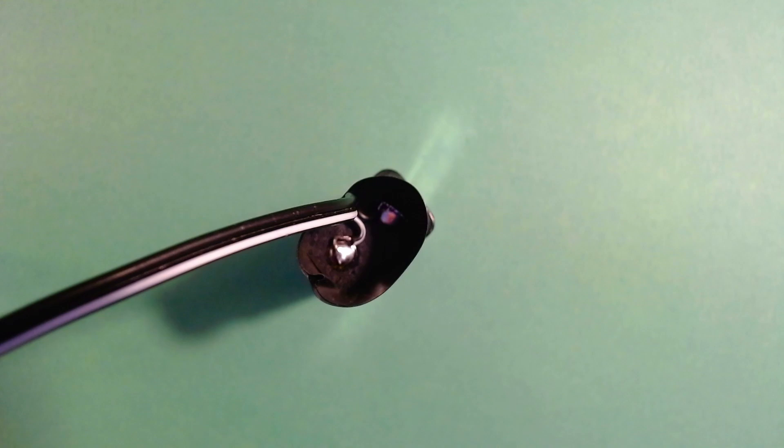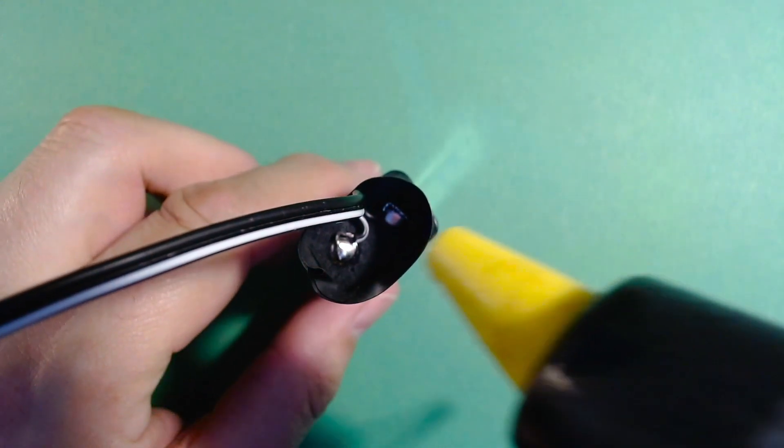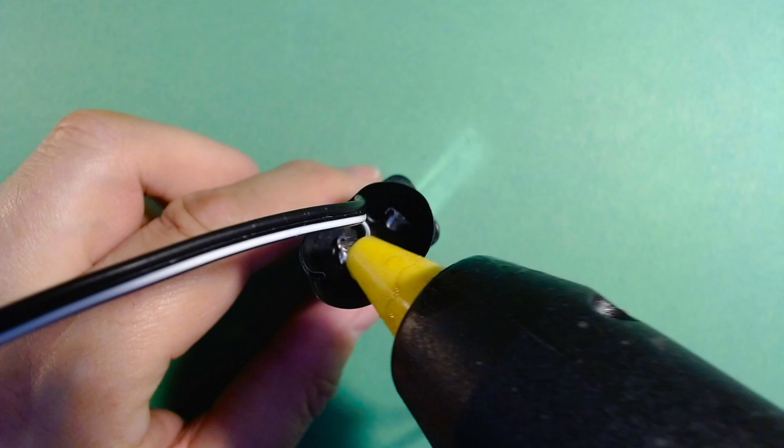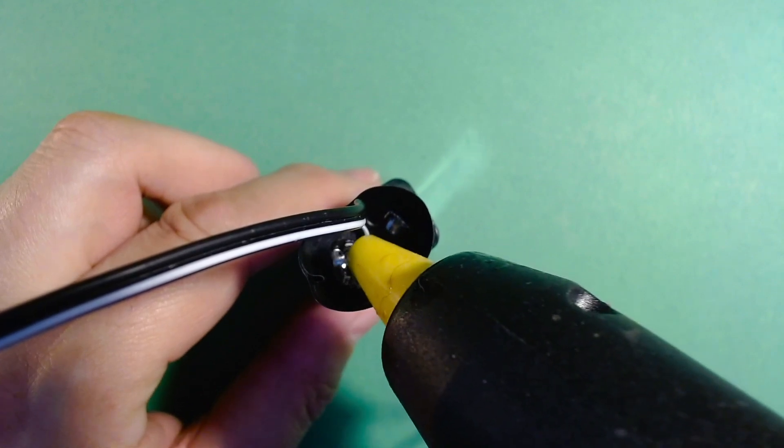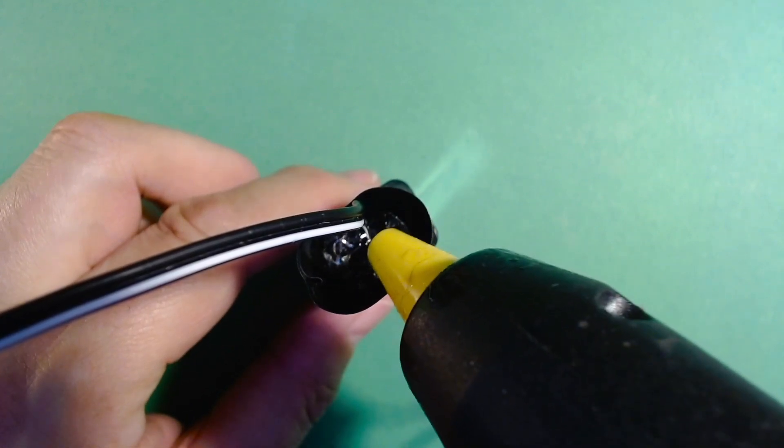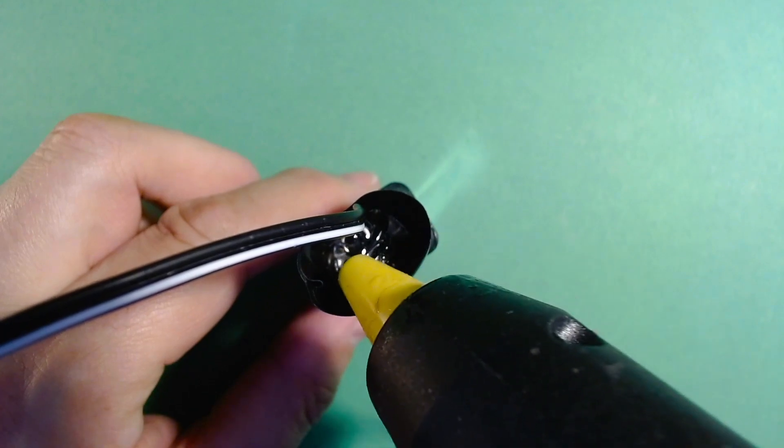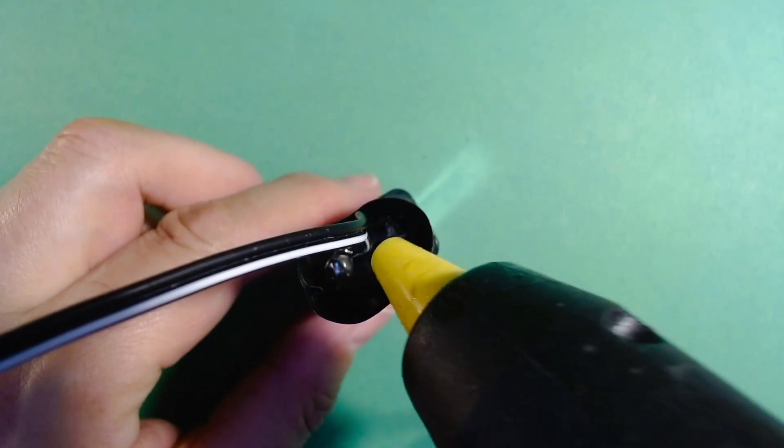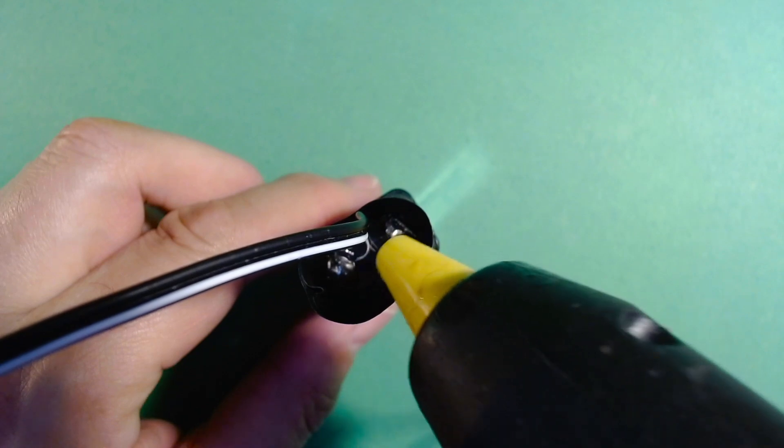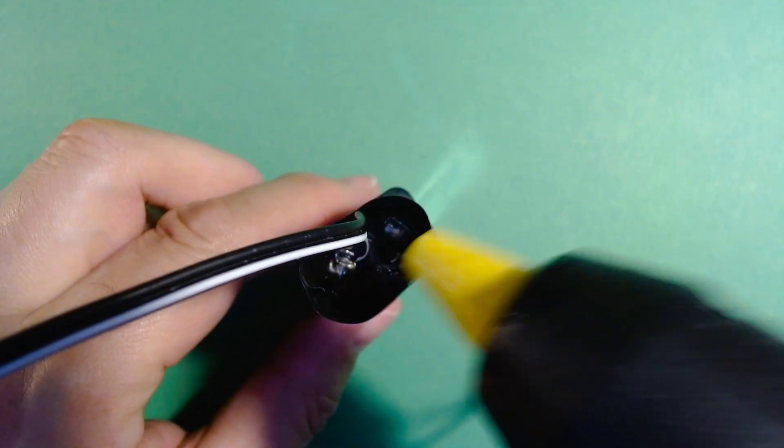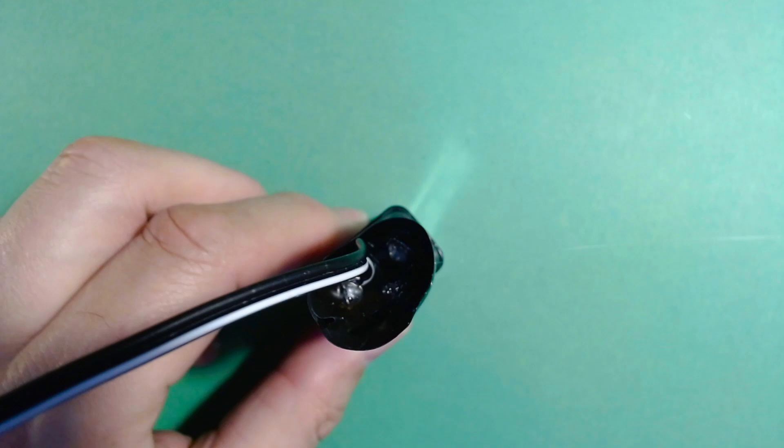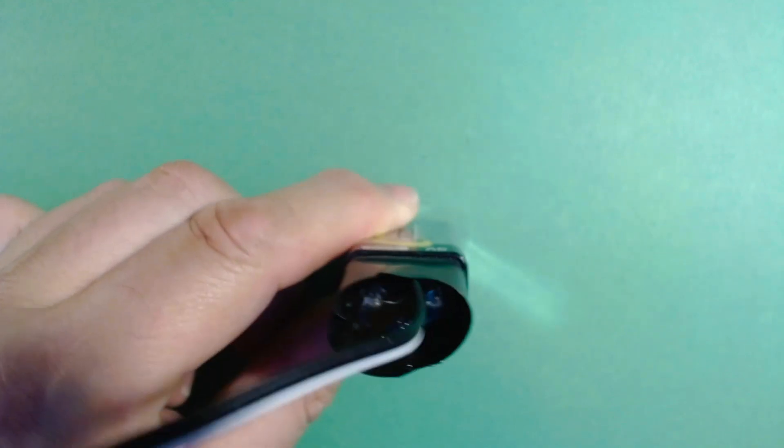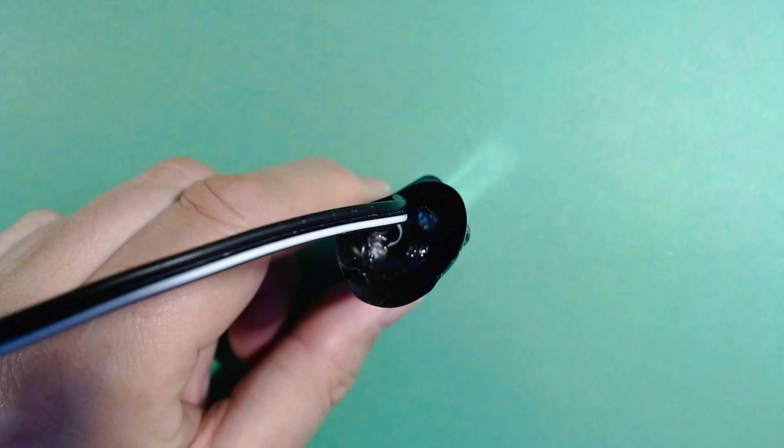So once the glue gun is hot enough, all we need to do then is just get the glue gun and pour in some hot glue into the hole. And what we want to do is just build up a layer that's about three or four millimeters thick. It should level itself. Then we just need to tap it a few times, get the glue to settle, and then leave it for about five minutes to cool down.